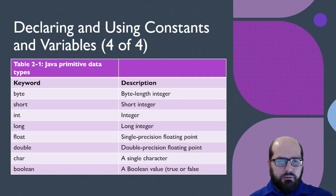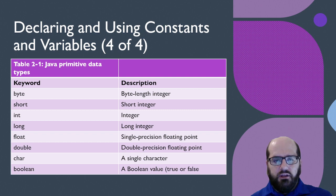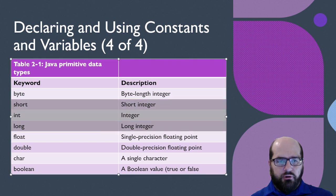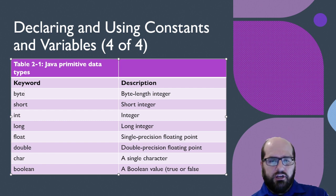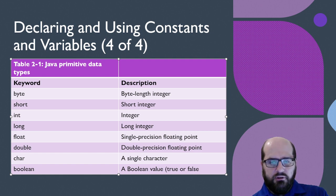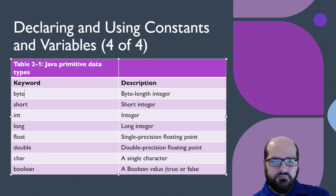There are eight primitive data types: byte, short, int, long, float, double, char, and boolean. The top four are integer data types. A byte can go up to 255 and down to negative 254. A short is a short integer — half the memory of an integer. A long is double the memory of an integer. For floating points, we have float and double, with double being twice the memory holding location of a float. A char is a single character, and a boolean is a true or false value.